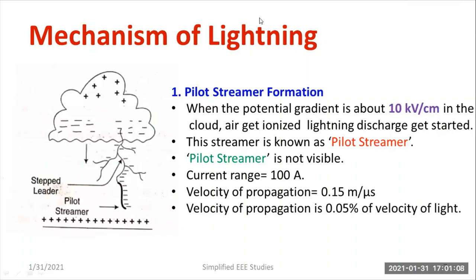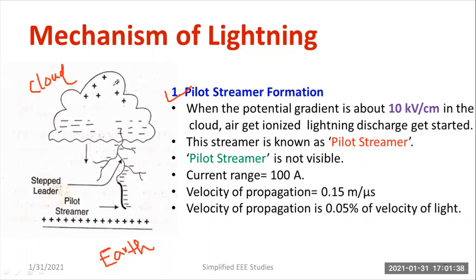Let us discuss pilot streamer formation. We consider two objects: the first is the cloud and the second is the earth — they act as two electrodes. The cloud has two layers: the upper layer is positive and the lower layer is negative. This occurs because of thunderstorm and air currents, which I already explained in Part 1 of the lightning video.